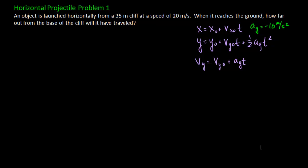The first thing to do when working any physics problem is to draw a diagram or picture to help you visualize what's going on. So we have a cliff where we have an object that's launched horizontally at 20 meters per second. It's a projectile problem, so it's going to follow some parabolic path to the ground. Our cliff is 35 meters high and we're asking how far out from the base of the cliff has this thing traveled.